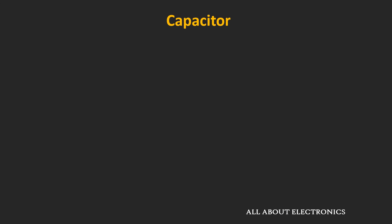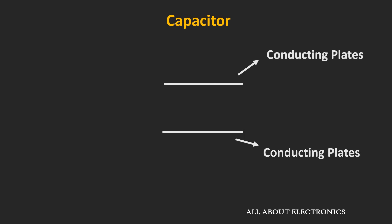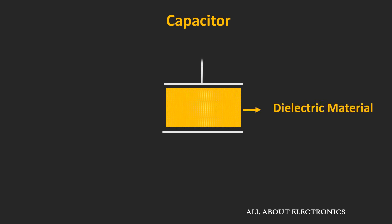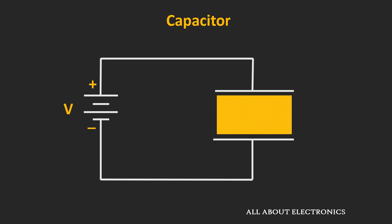This capacitor consists of two conducting plates which are separated by a dielectric material. This dielectric material is an insulating material and it opposes the flow of current. Now let's understand what happens when we apply voltage to this capacitor and how the energy is stored across it.